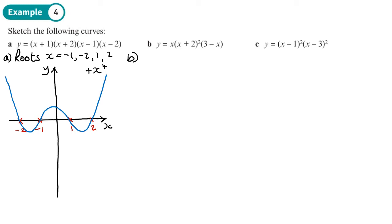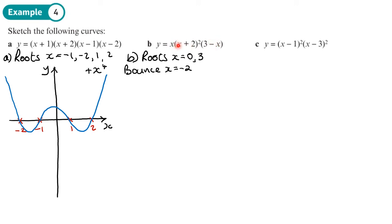For part b, the roots are x equals zero from the lone x factor, and x equals three from the last bracket. The graph is going to bounce at x equals negative two due to the squared factor. The coefficient of the x to the power four term, if multiplied out, would be negative, so it's going to be N-shaped — it'll do some odd stuff in the middle but overall be N-shaped.